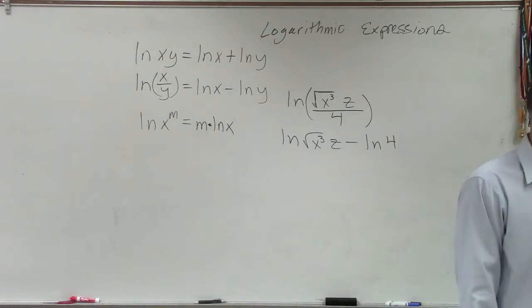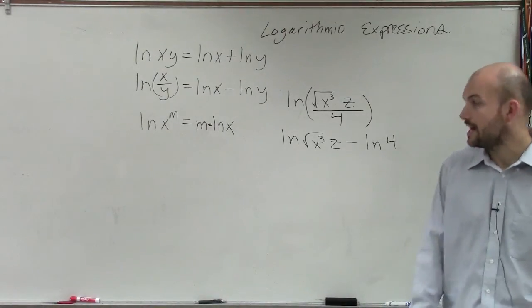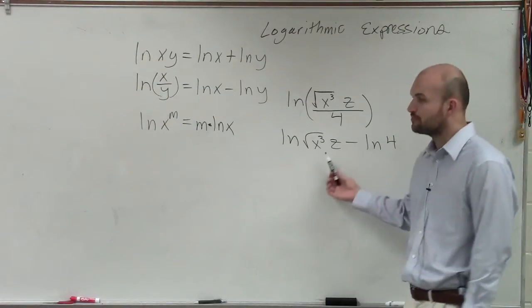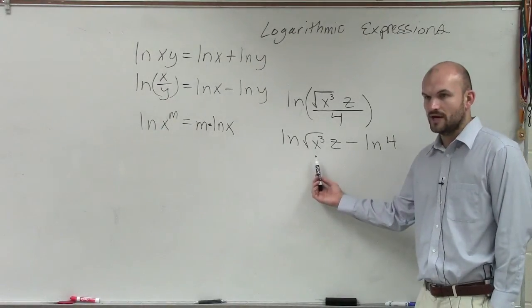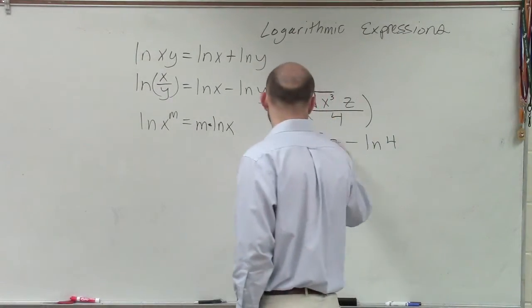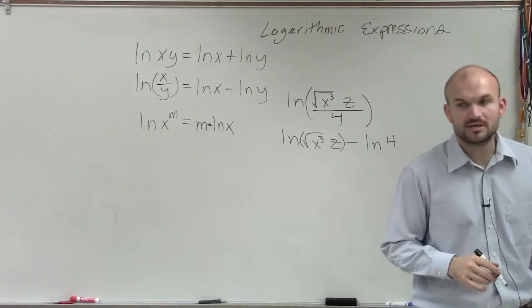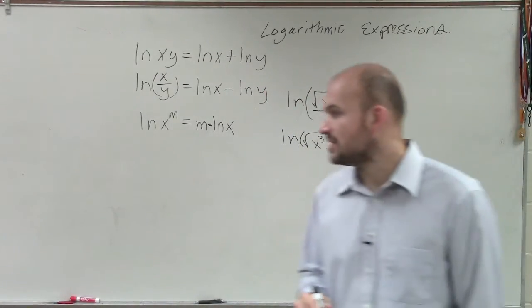Everybody understand where I came from in that point? Now we notice that there's actually a product here as well. This is the ln of that product, the square root of x cubed times z.